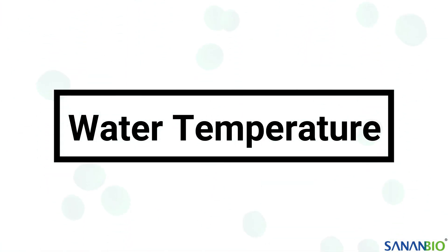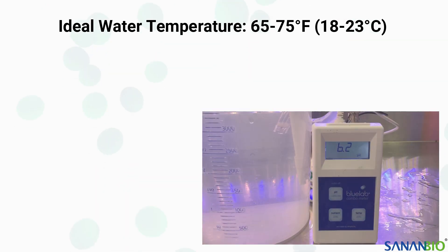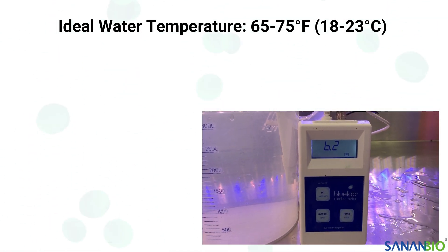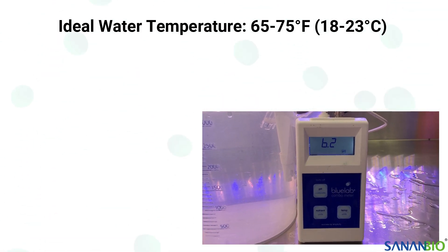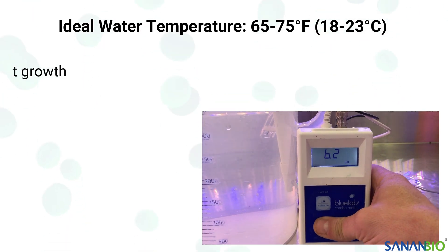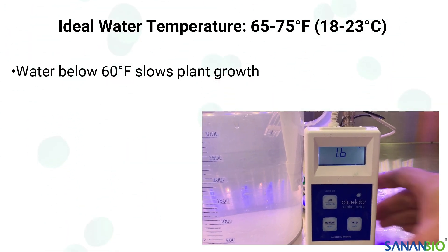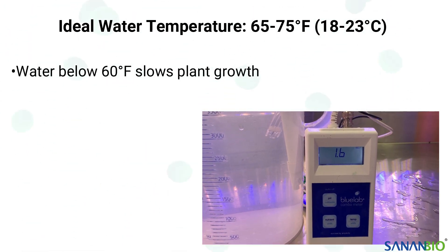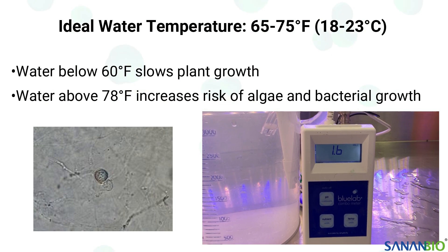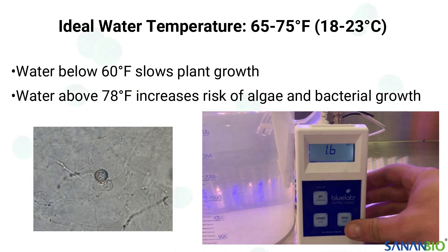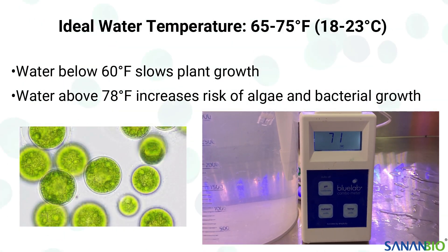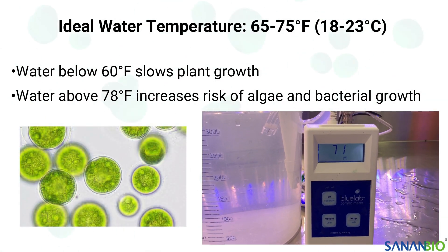We recommend maintaining water temperatures between 65 and 75 degrees Fahrenheit. Temperatures below 60 degrees can slow plant metabolism and temperatures over 78 degrees can increase the likelihood of undesirable bacterial growth and algae blooms.